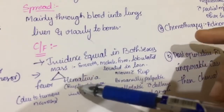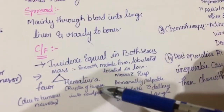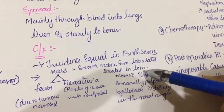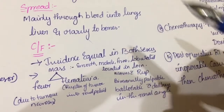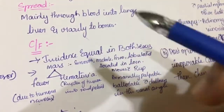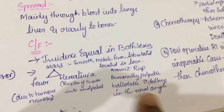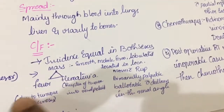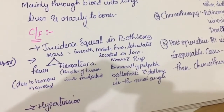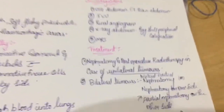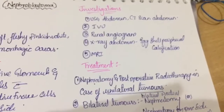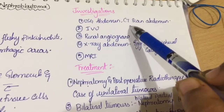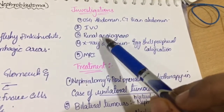Incidence is equal in both sexes. There is a classic triad of mass, fever, and hematuria. The mass is smooth, mobile, firm, lobulated, located in the loin, moves with respiration, and is ballottable on bimanual palpation with dullness on percussion in the renal angle. Hematuria results from rupture of the tumor into the renal pelvis. Fever is due to tumor necrosis, and hypertension is due to activation of the renin-angiotensin mechanism.